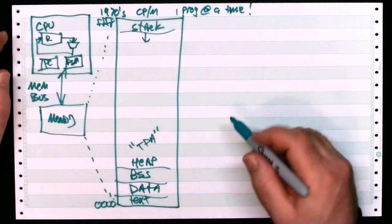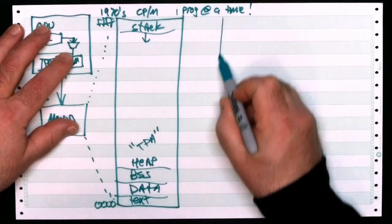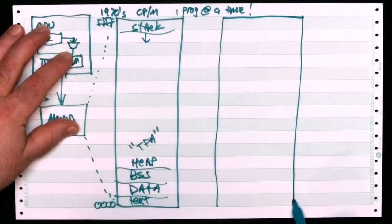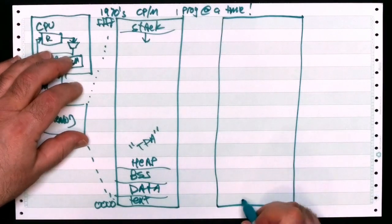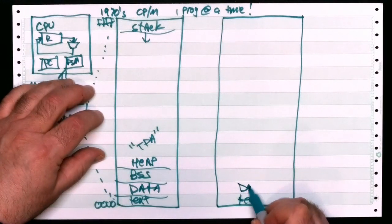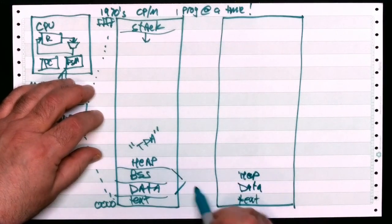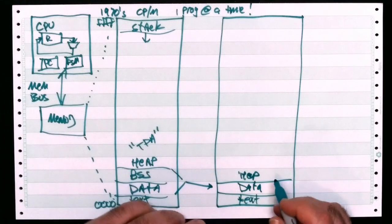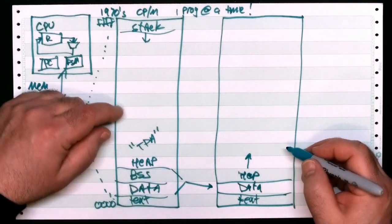After a while, people got bored with this and said, I really want to do more than one thing at a time. So instead of using the memory for one big process, they reorganized how it works. I'm going to put text data, BSS, heap - we'll merge these together for simplicity. The heap grows up and so on.